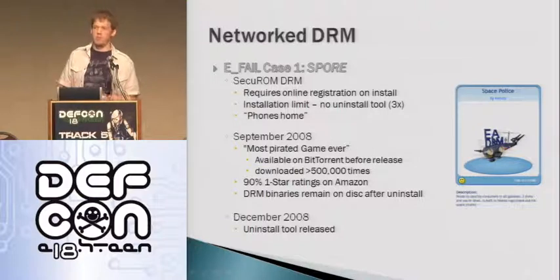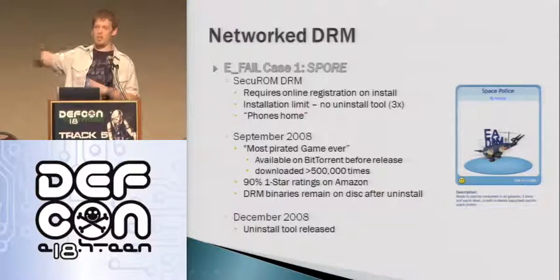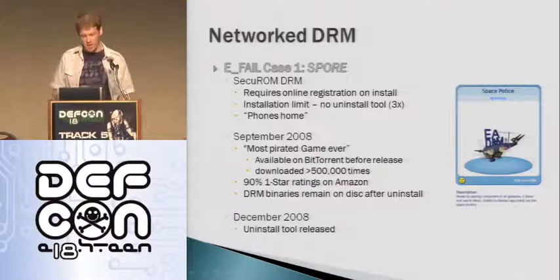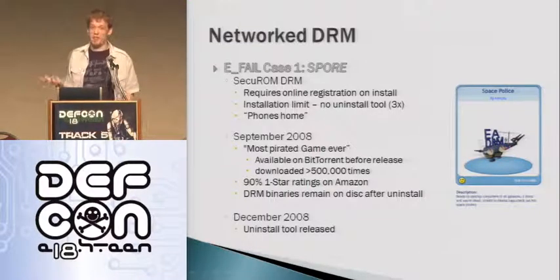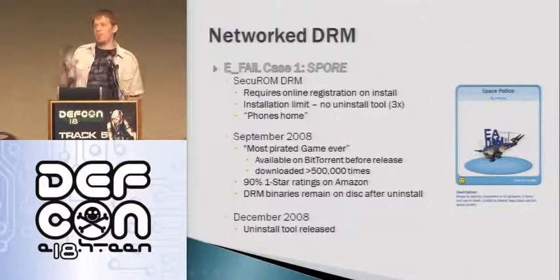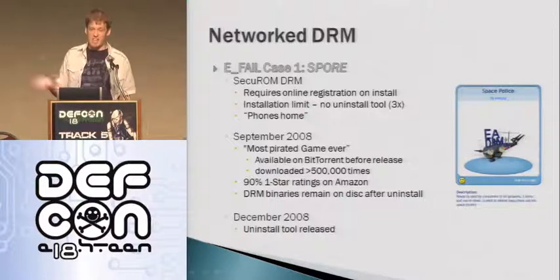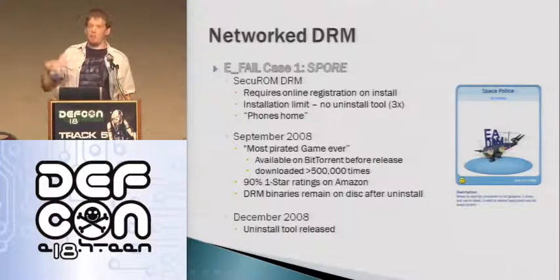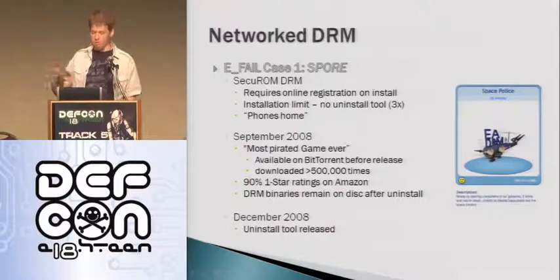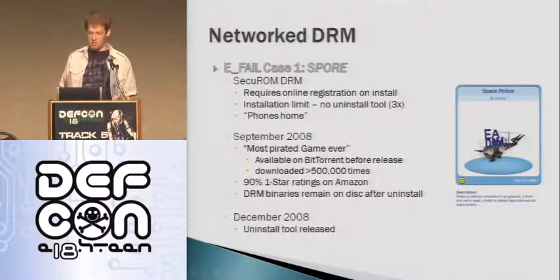A lot of people who actually used Spore really didn't like it — the game got one-star ratings, although for all other intents and purposes it's a cool game where you develop a little amoeba into a galactic civilization. From a DRM perspective, the binaries also stayed on disk, so you were stuck with those binaries for good. Luckily, with all the buzz around this, in December there was a release of an uninstall tool that would remove most of the binaries and also reset your install count. But the question is, why not get it right immediately? This is one of the first examples of network DRM starting to completely fail and fall apart.